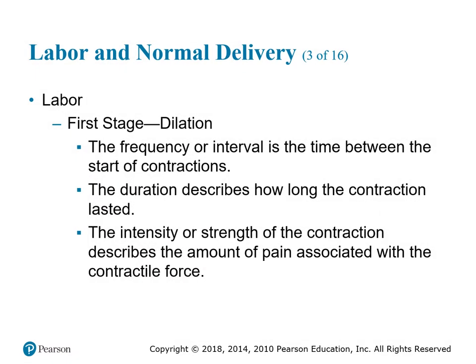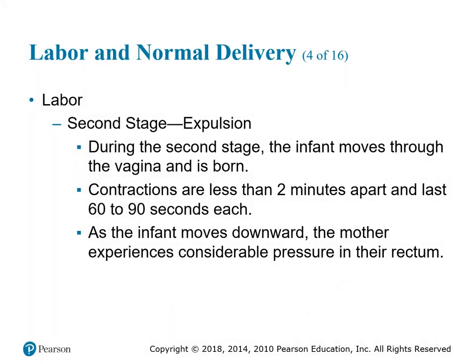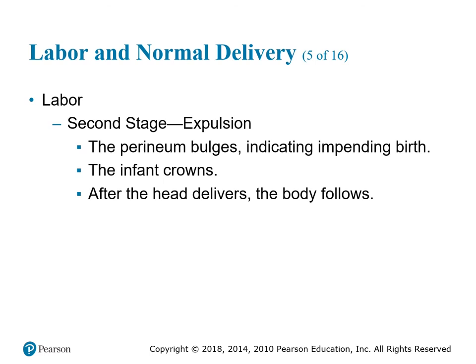The frequency or interval is the time between the start of contractions. The duration describes how long the contractions lasted, and the intensity or strength describes the amount of pain associated with the contractile force. The second stage, expulsion: the infant moves through the vaginal canal and is born. Contractions are less than 2 minutes apart and at least 60 to 90 seconds each in duration. As the infant moves downward, the mother experiences considerable pressure in the rectum. The perineum bulges indicating impending birth, the infant crowns, the head delivers, and then the body follows.